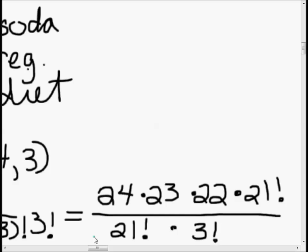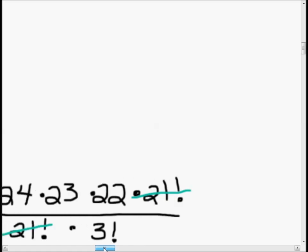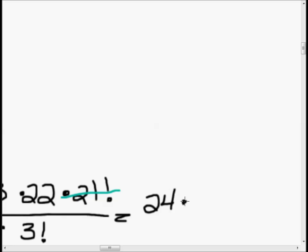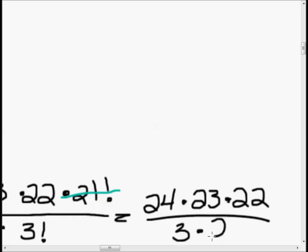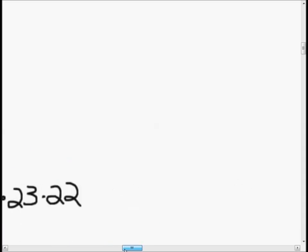On this one I'll do all the steps. 24 minus 3 is 21 factorial times 3 factorial. 21 factorial cancels out, and that always happens on these problems. You should be seeing that pattern by now. If not, do more practice problems. They always cancel out, both permutations and combinations. This turns into 24 times 23 times 22. Three goes into 24 eight times, and 2 goes into 8 four times. That turns into 4 times 23 times 22, which equals 2024.